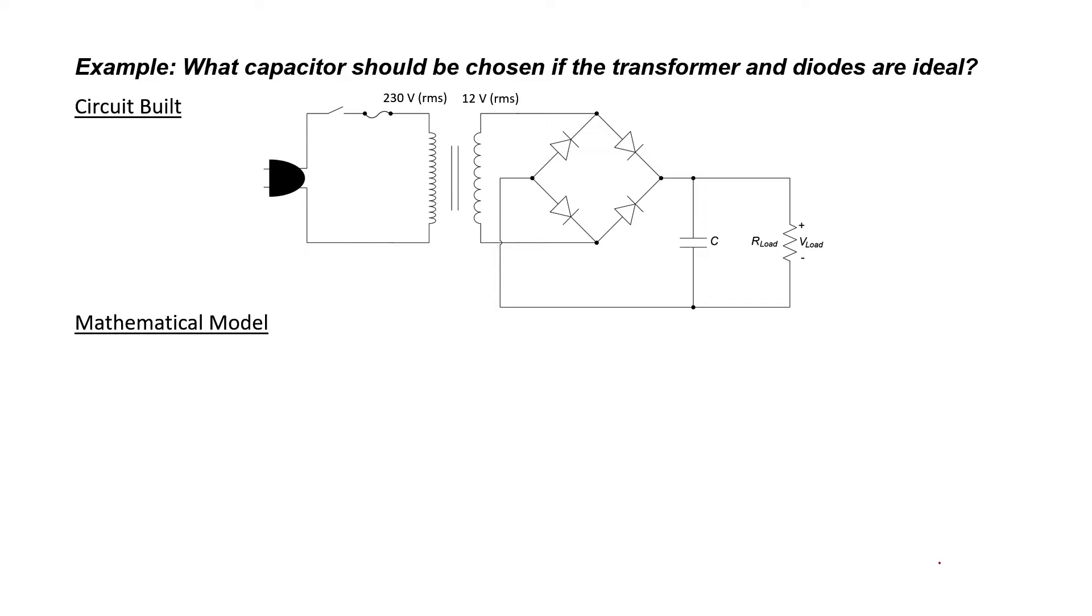In this video, we're going to take a look at ripple filters, and in particular, I'd like to take a look at the following example circuit. This is an example of a DC power supply, and what we're going to do in this video is answer the following question: How big should the capacitor be to achieve a particular ripple?